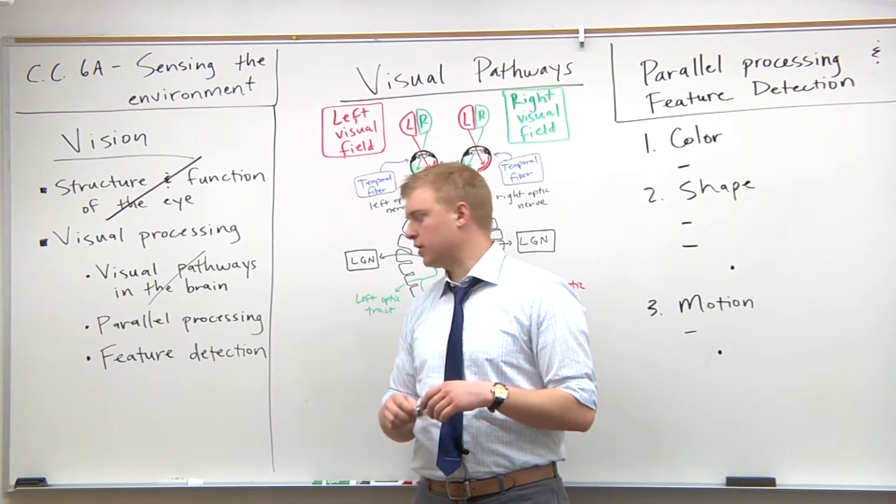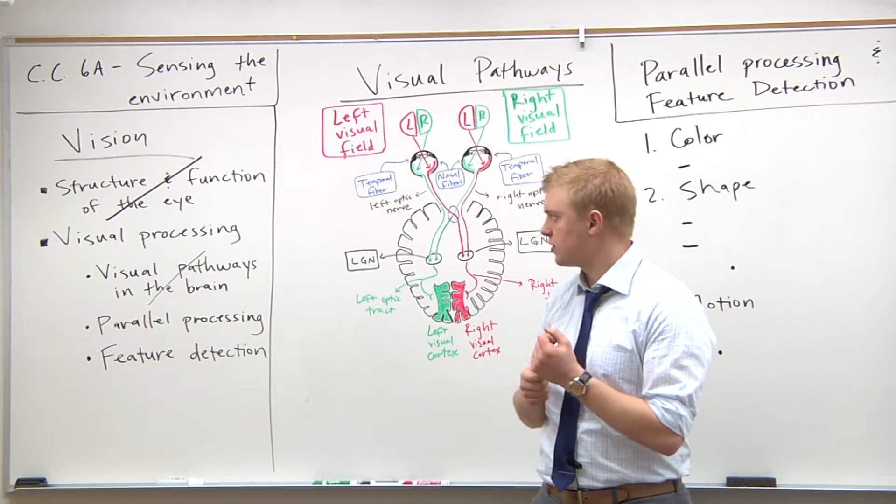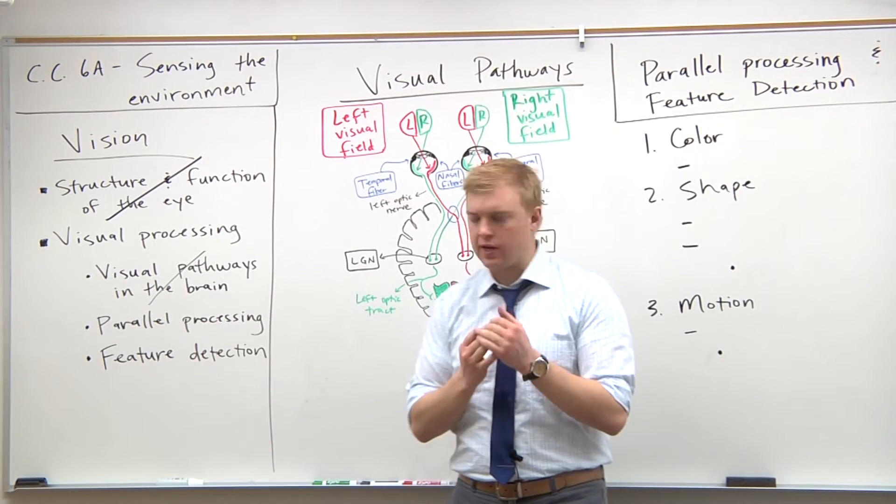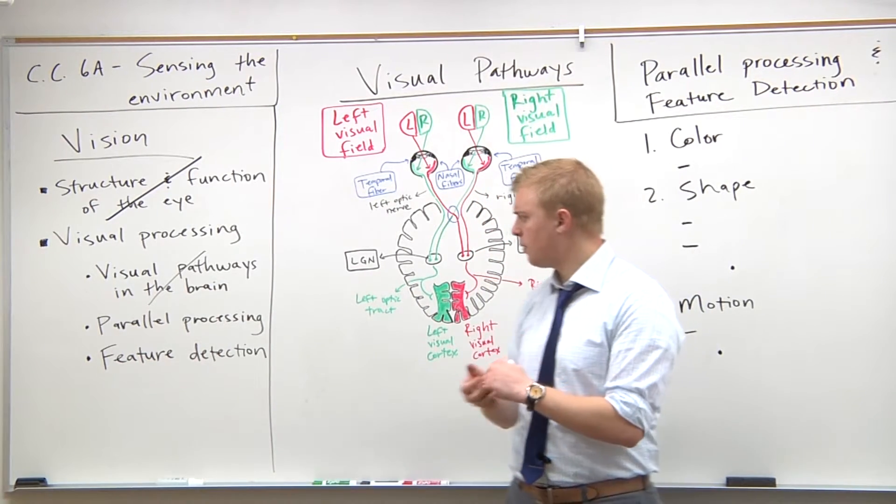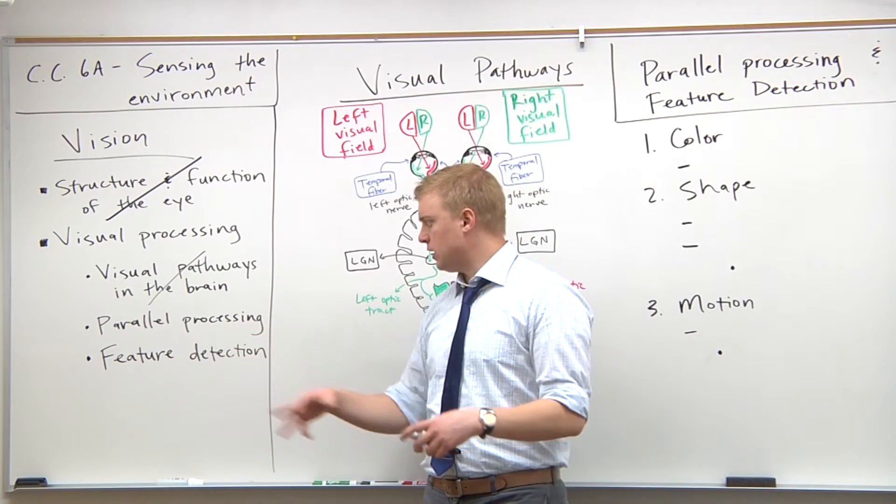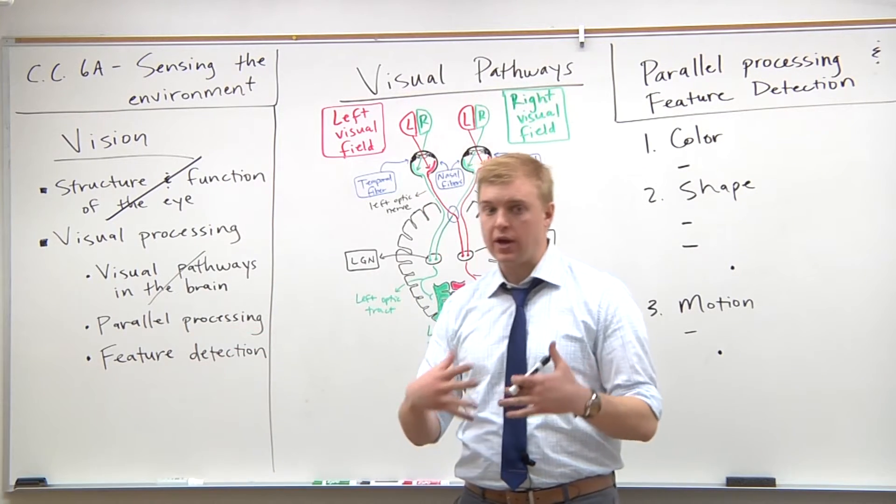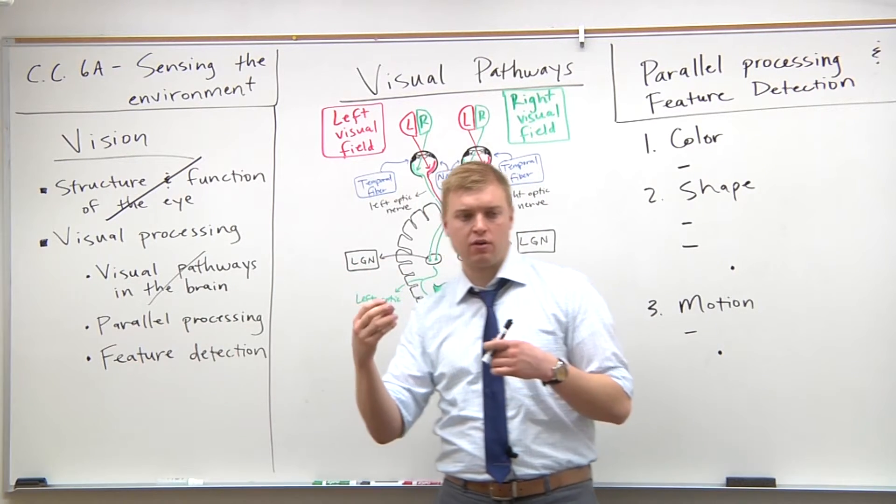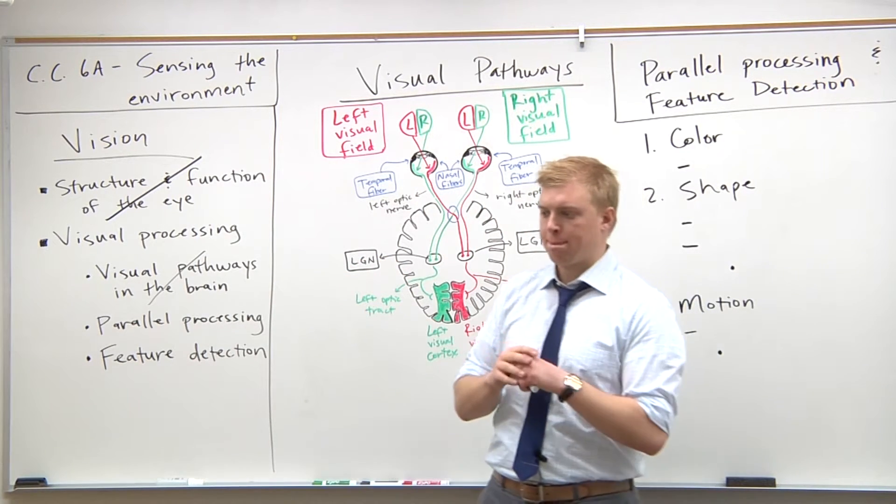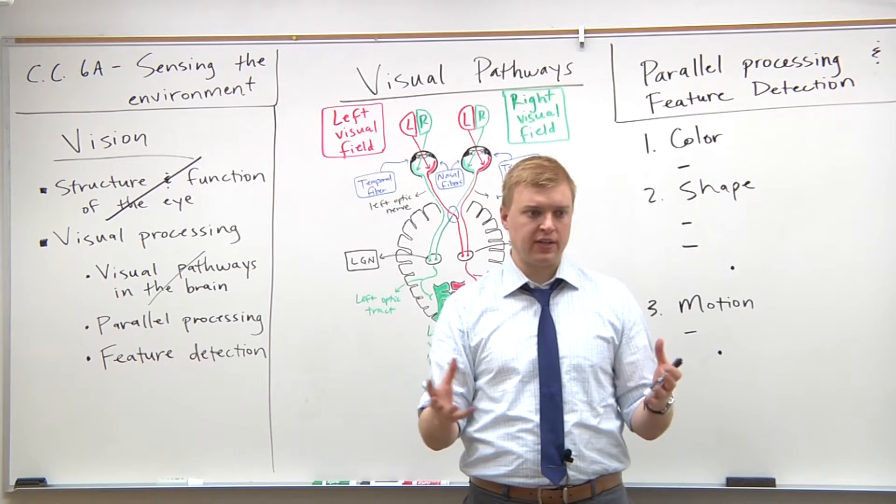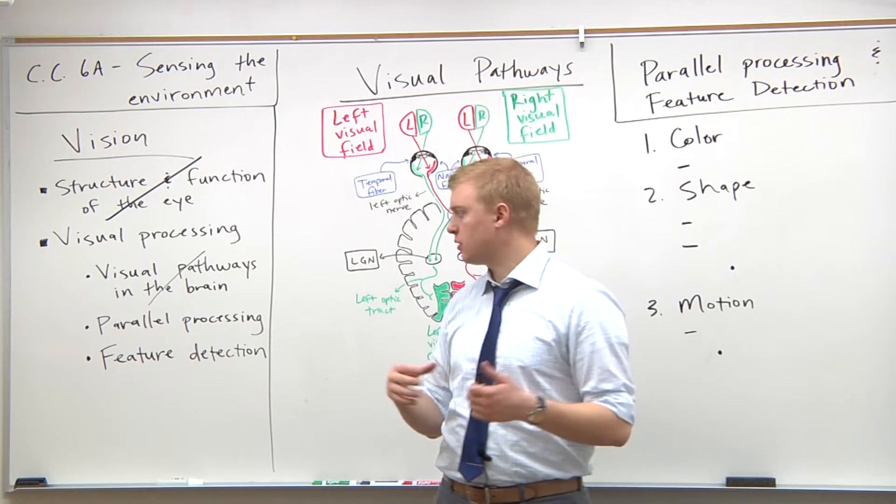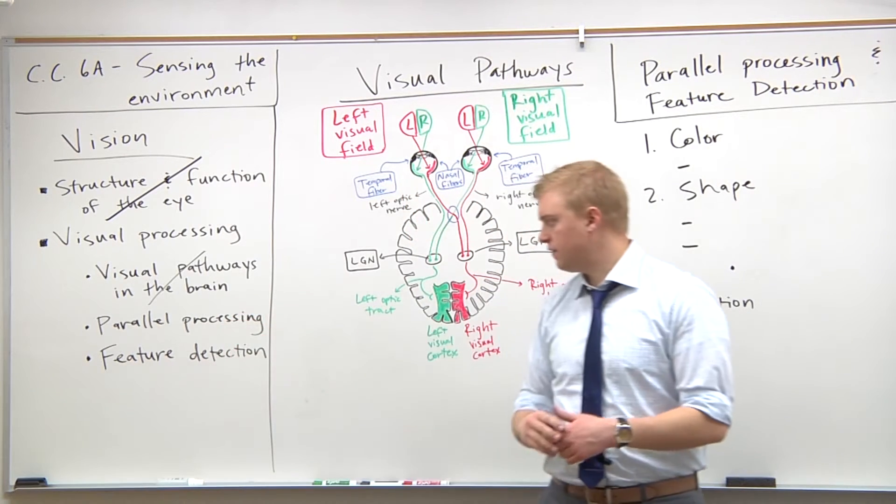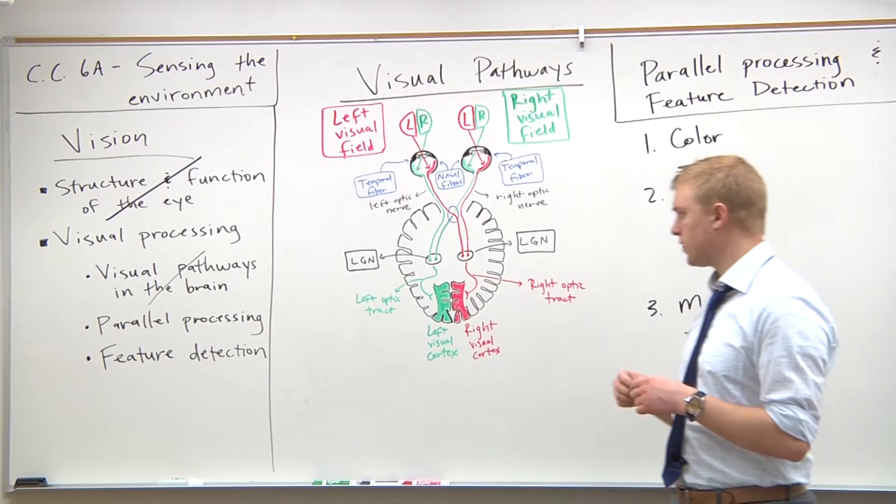Let's go ahead and finish up parallel processing and feature detection, which is going to be the last part of the vision discussion for today. These are dealing with being able to actually perceive. These photons of light, these objects that are reaching our eye, we don't want to just be able to sense them, but to relate with our environment we need to perceive and process them. So parallel processing and feature detection are what allow us to do this.